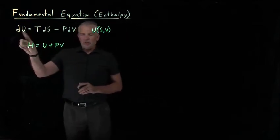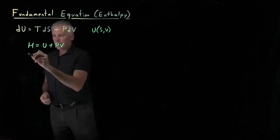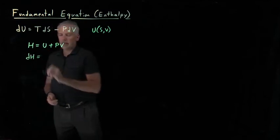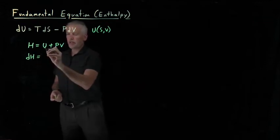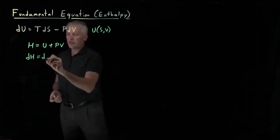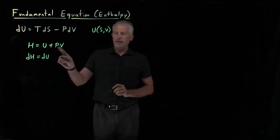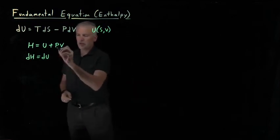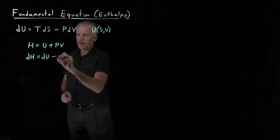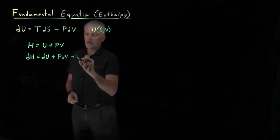Taking a differential expression: if I take the differential of the left side to get dH, and take the differential of the right, the differential of U is just dU. For the differential of the product pV, either one of those could be changing, so using the product rule, the differential of pV is p dV plus V dp.